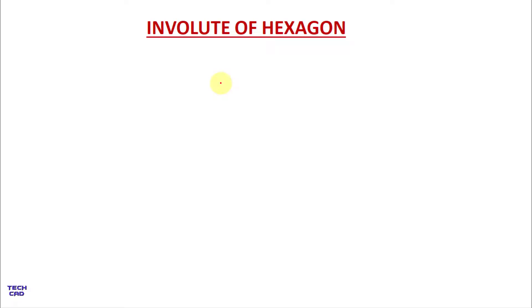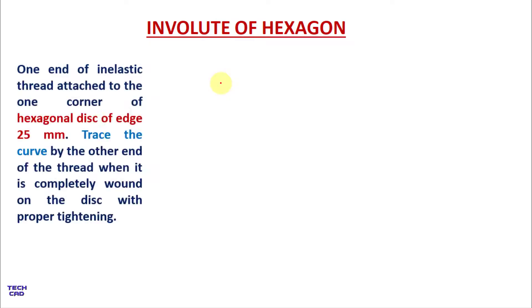Hello everyone. In this video we are going to make an involute of a hexagon. The question is: one end of an inelastic thread is attached to one corner of a hexagonal disc of edge 25 mm. Trace the curve by the other end of the thread when it is completely wound on the disc with proper tightening. This means we have a hexagonal disc with an inelastic thread wound around it, and we are going to trace the curve made by the thread.